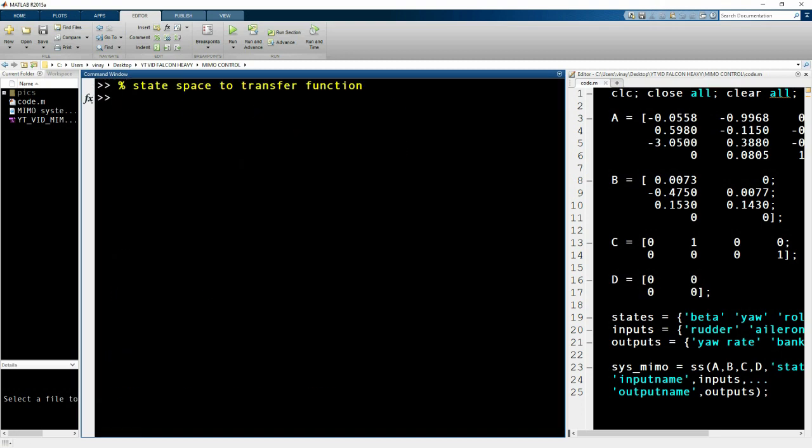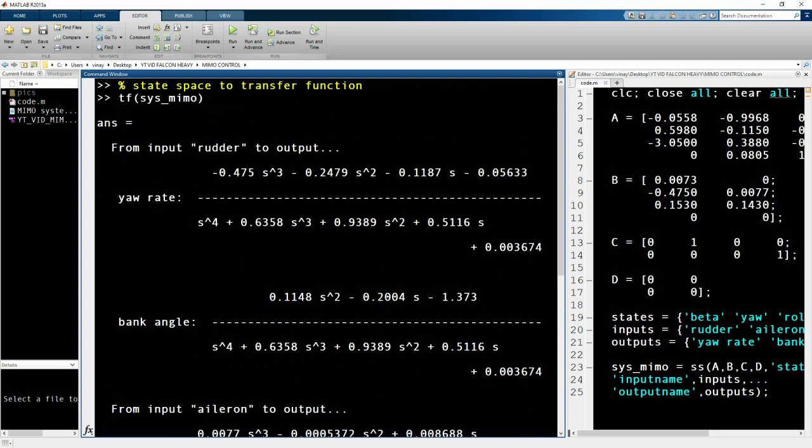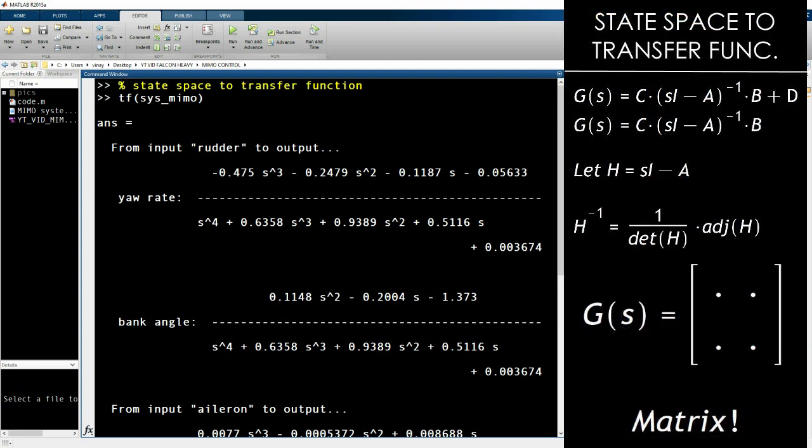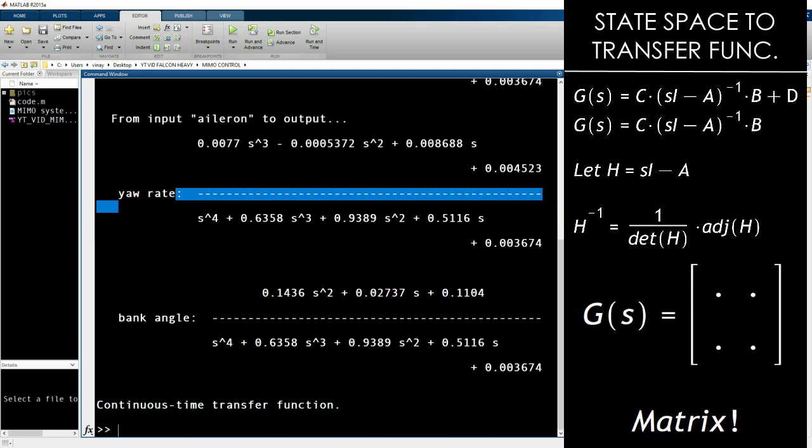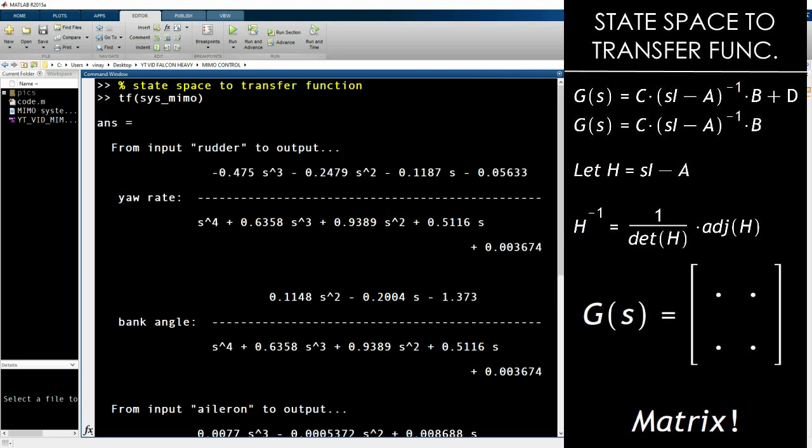Next, we can convert it to transfer function. The command for that is TF, but the math can be seen here. You can represent time domain and s domain because you have the Laplace transform to convert between the two forms. You'll see that each input will lead to two outputs—rudder can control the yaw rate and the bank angle, and same with the aileron.